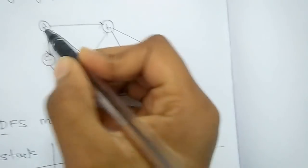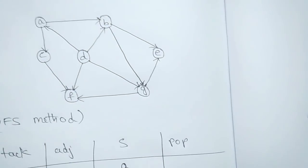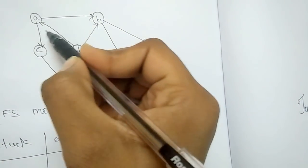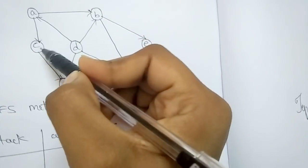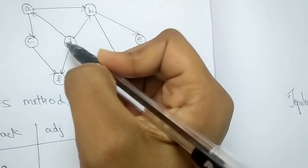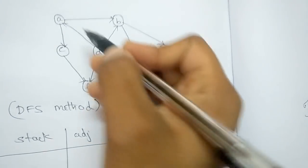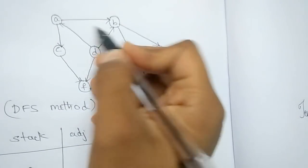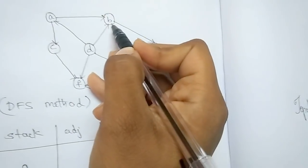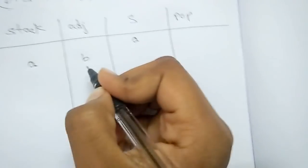Adjacent to a particular vertex means the edges going out from that vertex towards other vertices. For vertex A, B and C are adjacent because the edges go towards them. D is not adjacent to A because its edge is coming towards A, not going out. Since there are two vertices adjacent to A — B and C — I'll go alphabetically and consider B first, then C next.